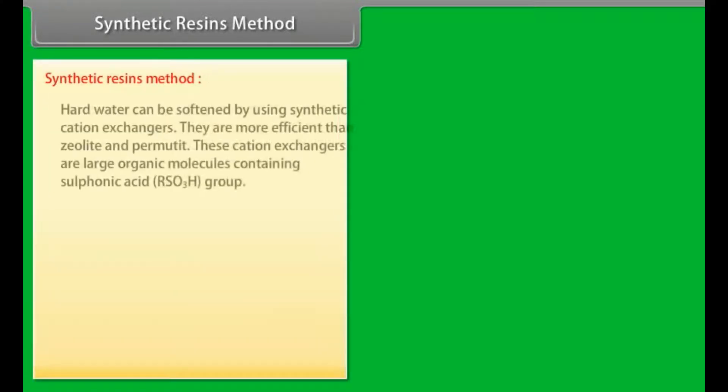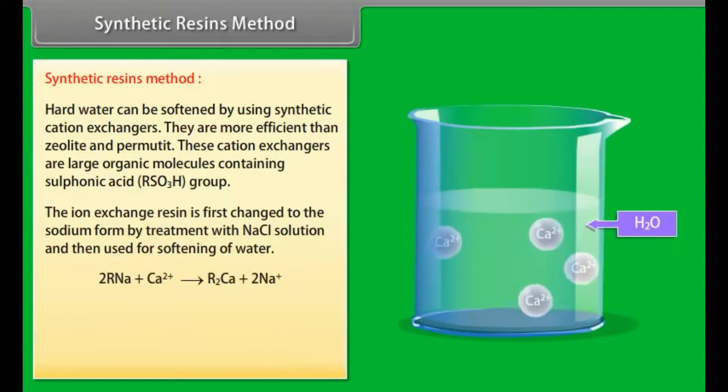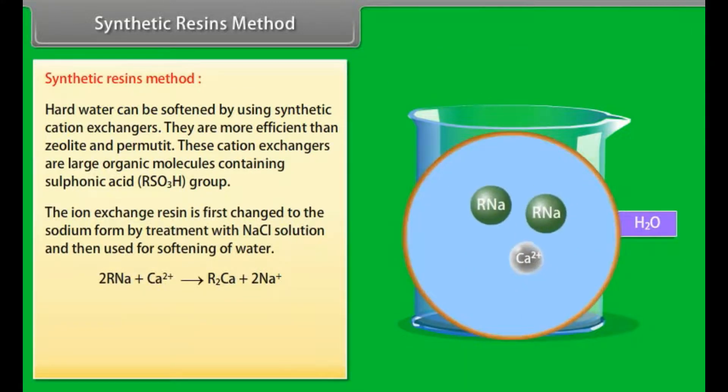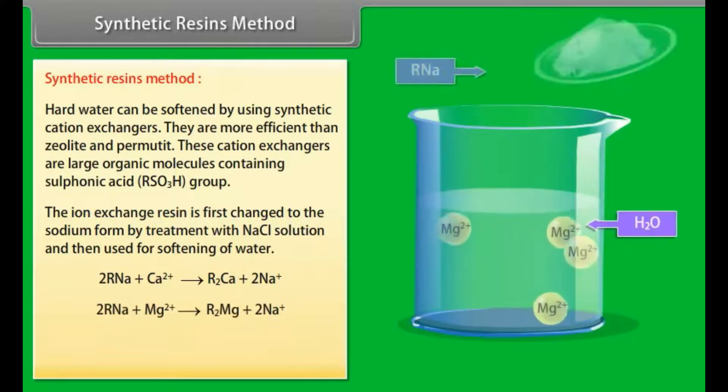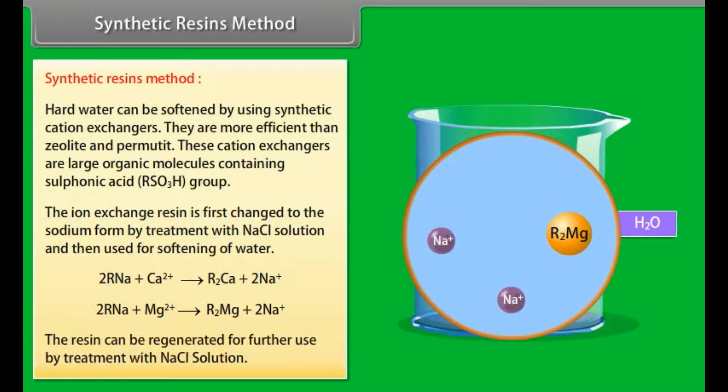Synthetic resins method: Hard water can be softened by using synthetic cation exchangers. They are more efficient than zeolite and permutate. These cation exchangers are large organic molecules containing sulfonic acid RSO3H group. The ion exchange resin is first changed to the sodium form by treatment with NaCl solution and then used for softening of water. The resin can be regenerated for further use by treatment with NaCl solution.